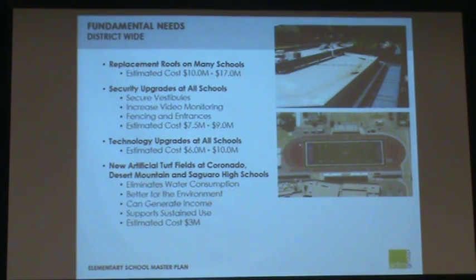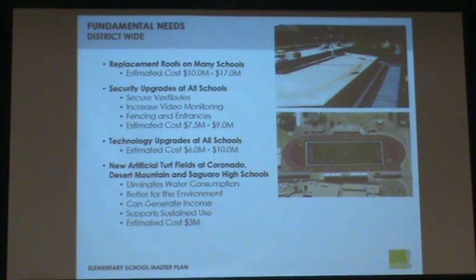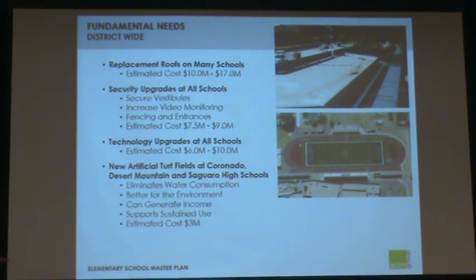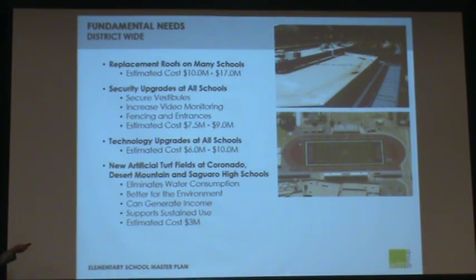Another consideration may be artificial turf at Coronado, Desert Mountain, and Saguaro High Schools — your other high schools already have artificial turf. Some benefits of artificial turf include: you don't have to water, it's better for the environment, you don't have to mow, it can generate income such as renting for Pop Warner games, and it lasts longer. Estimated cost for that would be $3 million.